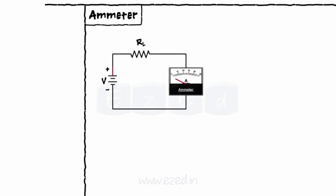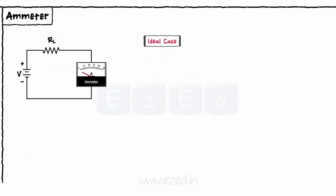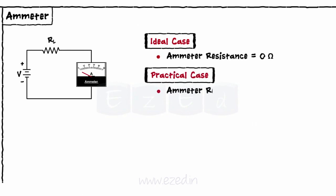An ammeter is always placed in series with a circuit element to measure the electric current flowing through it. Ideally, an ammeter should have zero resistance, but practically a small amount of resistance is always present which is negligible. An ammeter is represented by a capital A in a circle as shown.